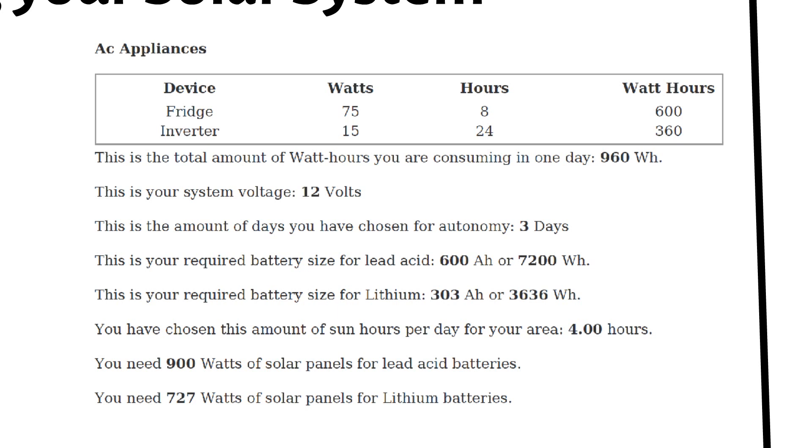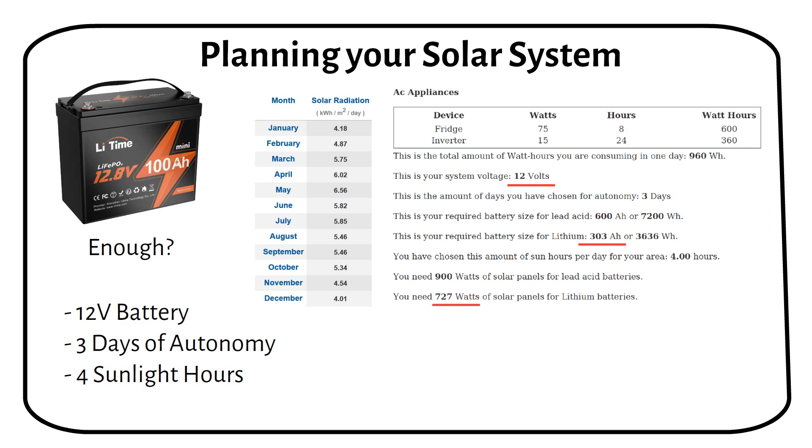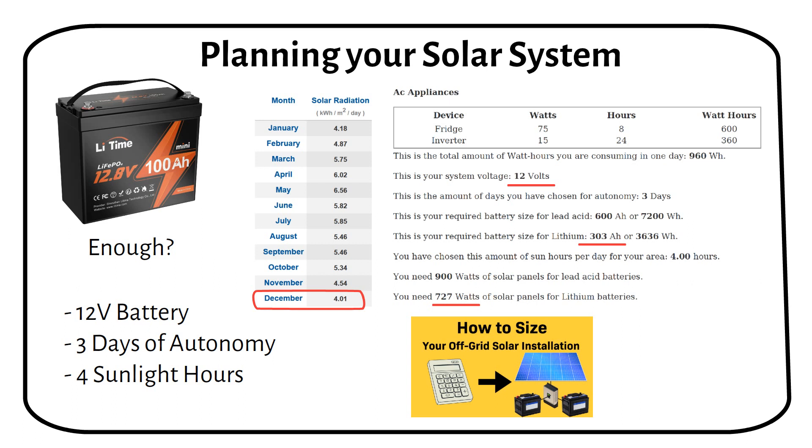After we've filled in all the information, we need a 12 volt 300 amp hour lithium battery and 800 watts of solar panels. It might seem like a big setup just for a fridge, but it's important to keep things running, even if there's no sun for several days. It's important to note that the sun hours are based on a worst case scenario. In this example, a winter in Florida, as shown in this sun hours table. Depending on where you live, especially if it's further from the equator, you might need to adjust your solar panels and battery capacity accordingly. For those looking to dive deeper into sizing your solar system, I've linked a detailed video in the description below.